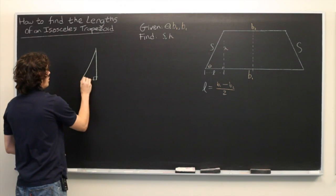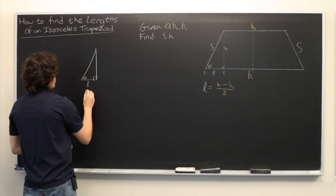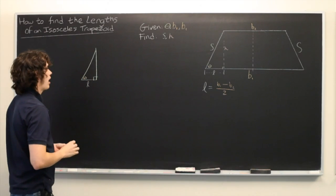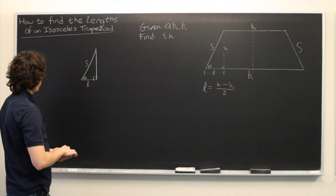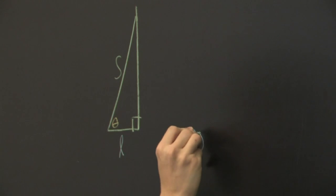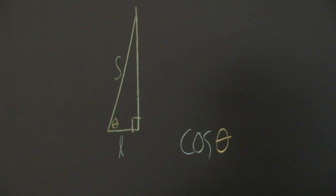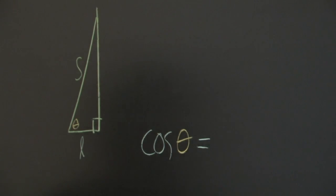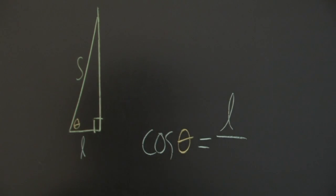We have theta. We also know L. First question is, how do we solve for S? Well, simple trigonometry tells us that the cosine of theta is equal to the adjacent side, or L, over the hypotenuse, S.